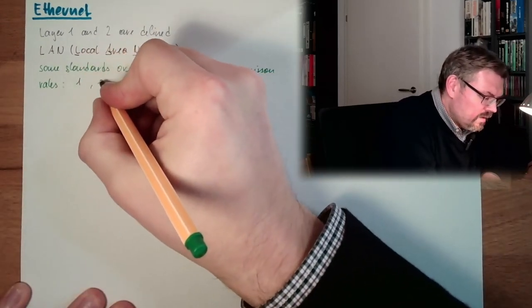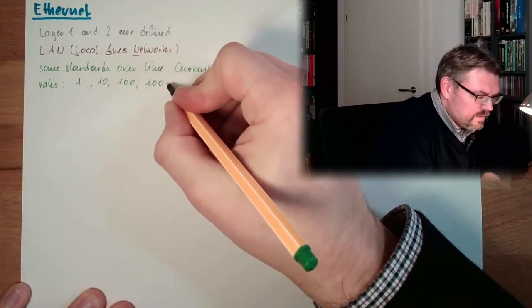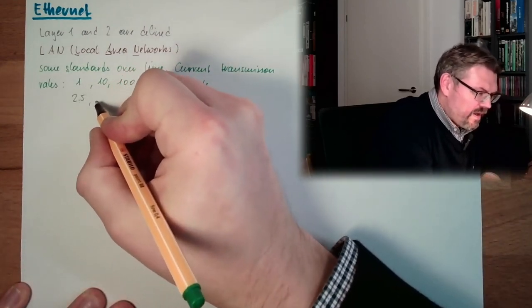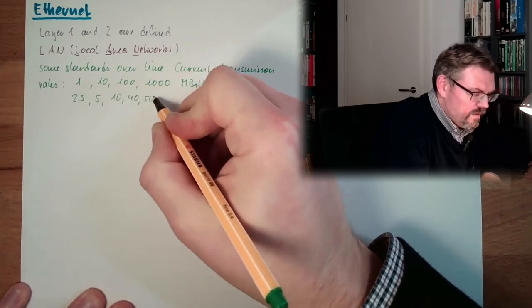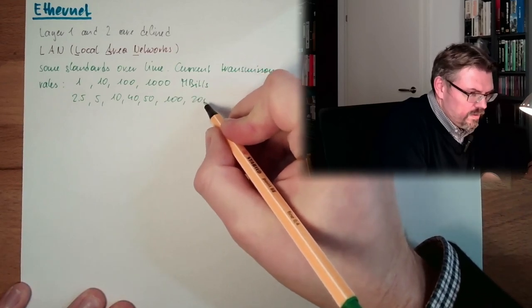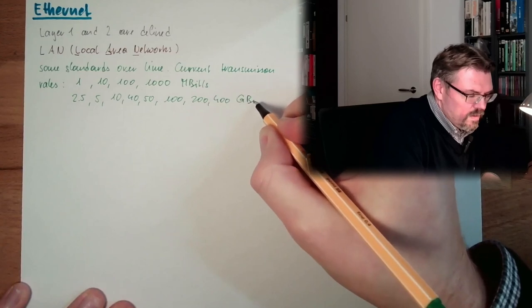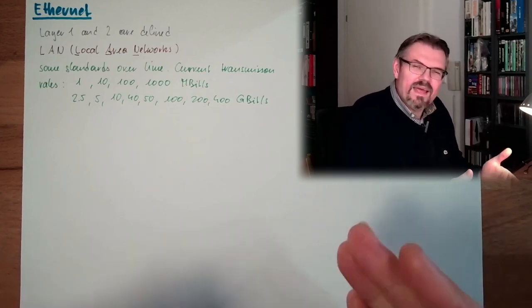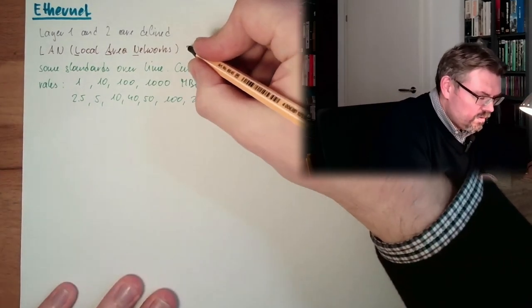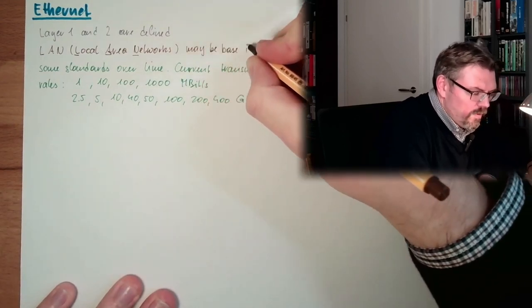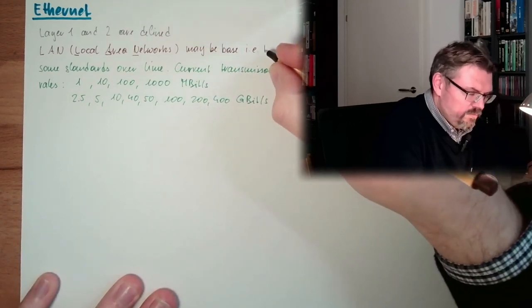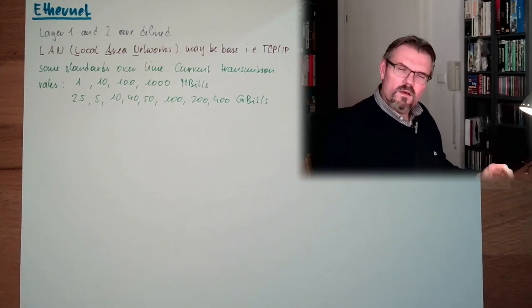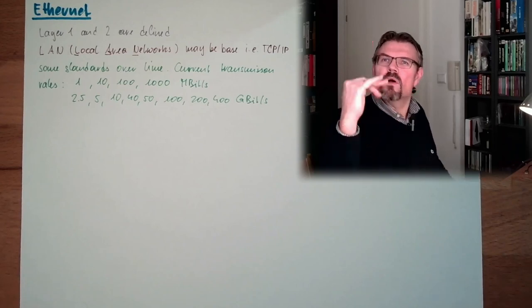So we have 1, 10, 100, or 1000 megabit per second transmission rates. And then there are even standards for 2.5, 5, 10, 40, 50, 100, 200, and 400 gigabit per second. So there is a wide area of different standards. It may be based on, for instance, TCP/IP, IPX/SPX, or AppleTalk — these are all upper layer protocols using Ethernet as a base layer.